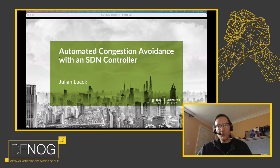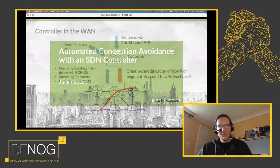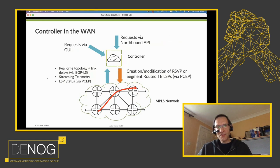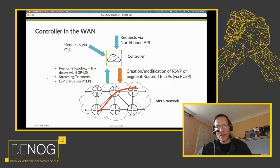With an SDN controller you can do it fully automatically. What I want to do is talk about exactly how to achieve that. Nowadays you can get controllers for the wide area network, and this type of device is a live controller directly coupled to the production network — as opposed to being some sort of offline tool — and it has a lot of visibility of what's happening in the network right now.